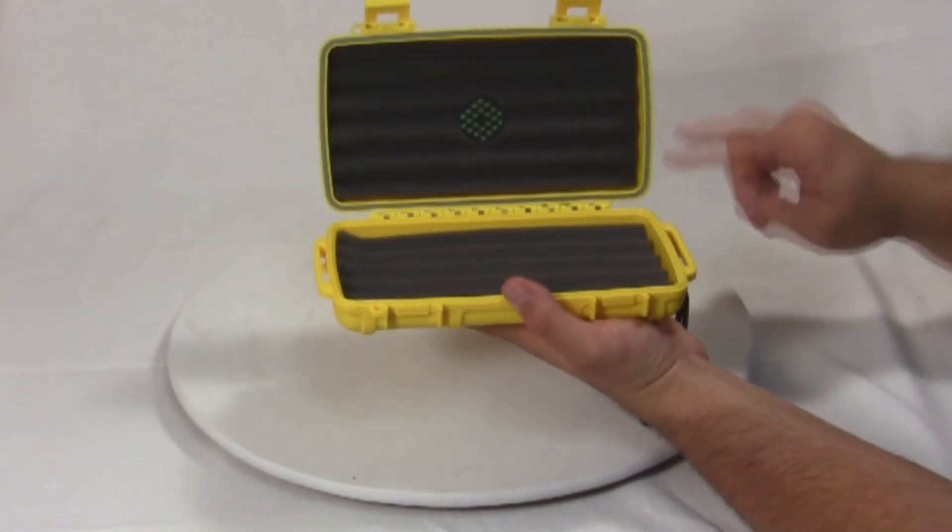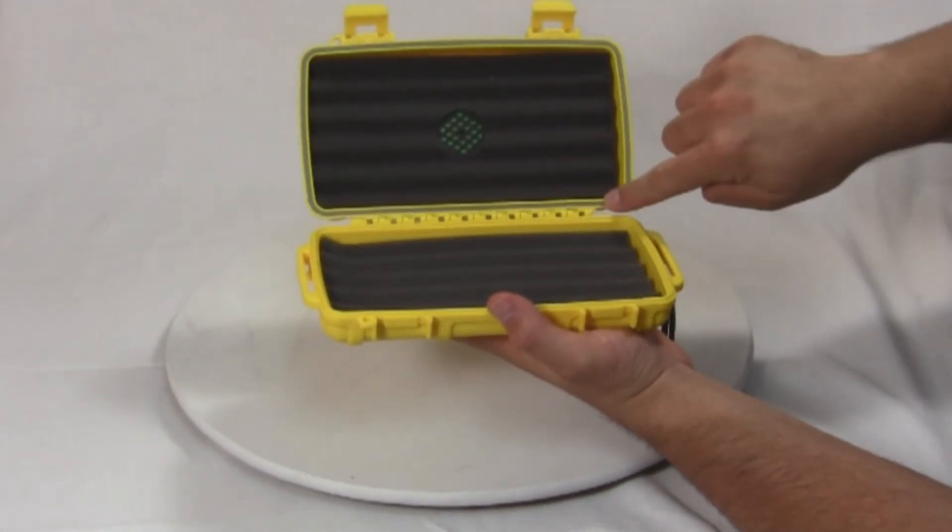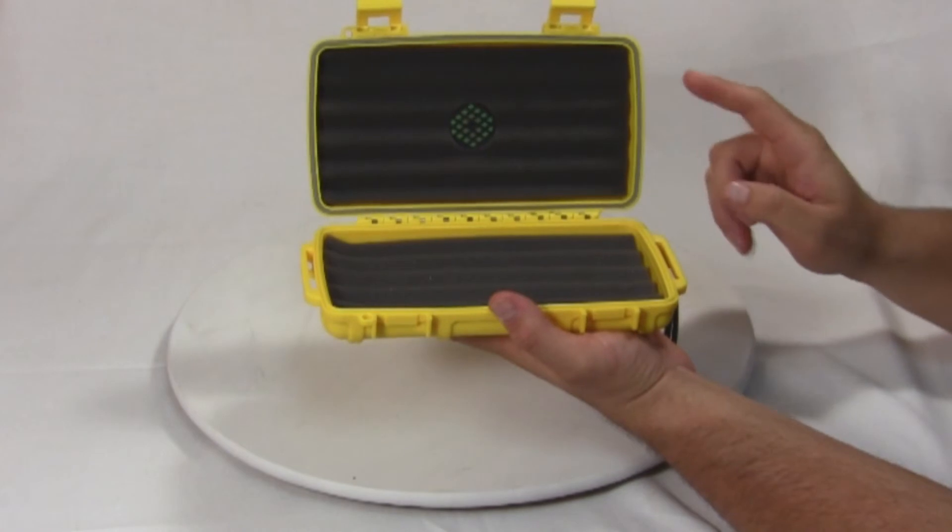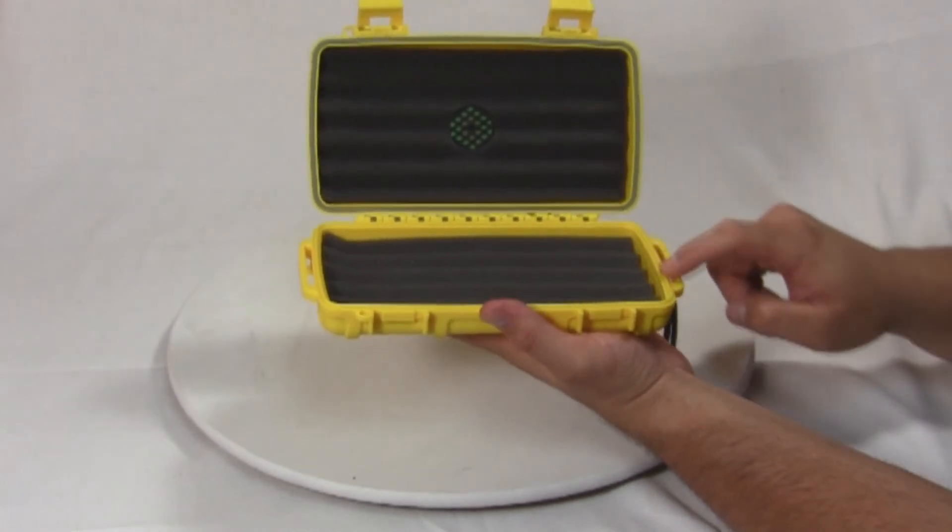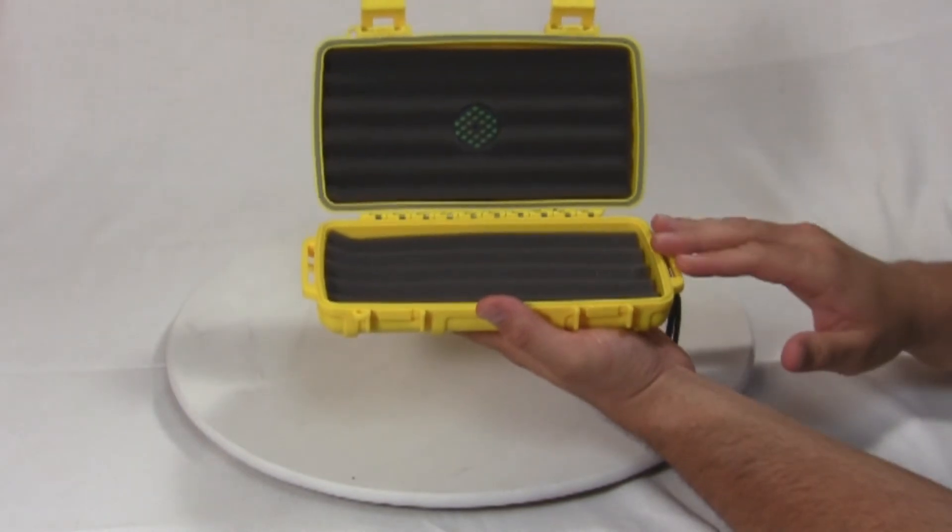On the inside, on the lid, there's an O-ring that goes around the entire top of the lid. Now when you close this, it meshes with the lip right here at the base of the box and gives you an airtight seal.